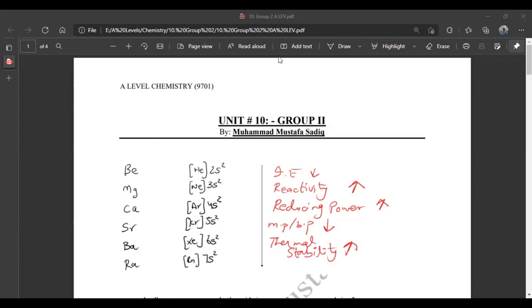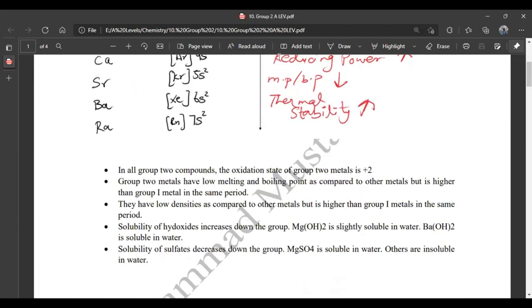You can see that in all Group 2 compounds, oxidation state of Group 2 metals is plus 2.